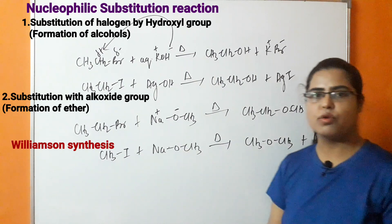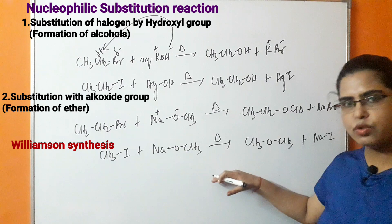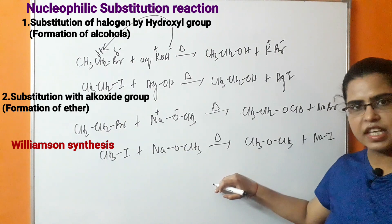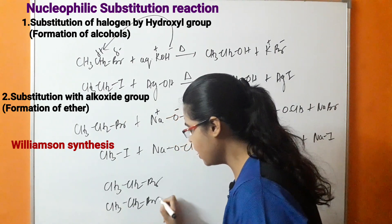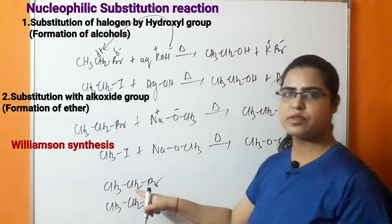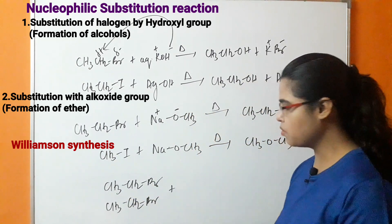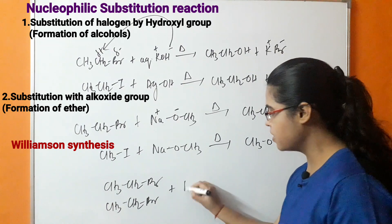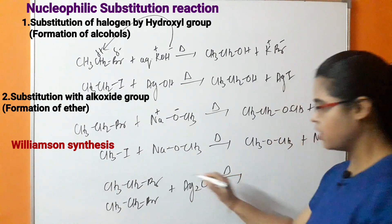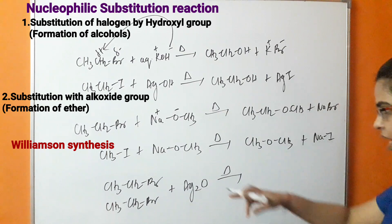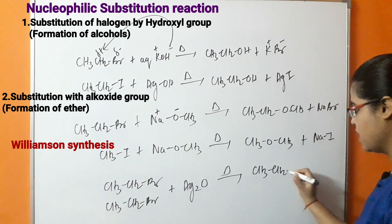This reaction is known as Williamson synthesis and is used for the preparation of ethers. When we take two moles of ethyl bromide in the presence of dry silver oxide, there is a formation of diethyl ether and AgBr is removed.